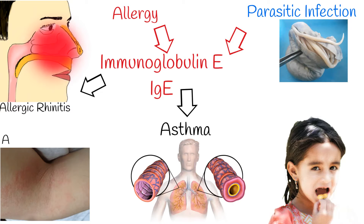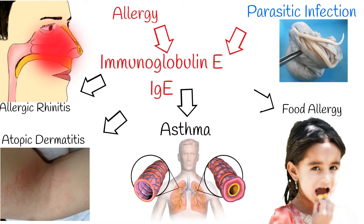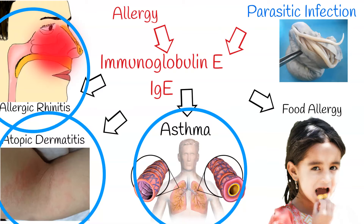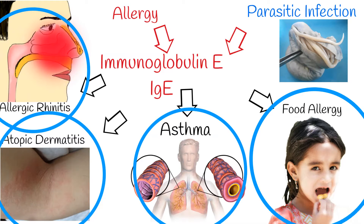Currently, testing for immunoglobulin E (IgE) sensitization is the cornerstone of diagnostic evaluation in suspected allergic conditions. Five immunoglobulin isotypes exist, and immunoglobulin E plays a major role in allergy and allergic diseases like asthma, atopic dermatitis, and allergic rhinitis. IgE also contributes significantly to the body's immune response to parasitic infections, which are more prevalent in third-world countries.